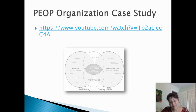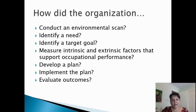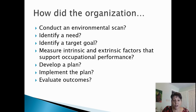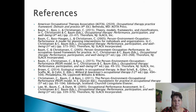In prep for lab, I'd like you to watch a video about what happened in a BMW plant in Germany — how they carried through what could very easily be a PEOP case study. How did this organization conduct that environmental scan? How did they identify a need, identify a target goal? What kinds of intrinsic and extrinsic factors did they identify that supported and also provided barriers to occupational performance? What plan did they develop, how did they implement it, and how did they evaluate the outcomes? This is going to give us some good clues for our organizational case study that we'll complete in lab. Thanks, see you soon.